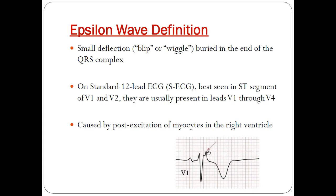This leads to what is called the epsilon wave. It is caused by post-excitation of myocytes in the right ventricle.